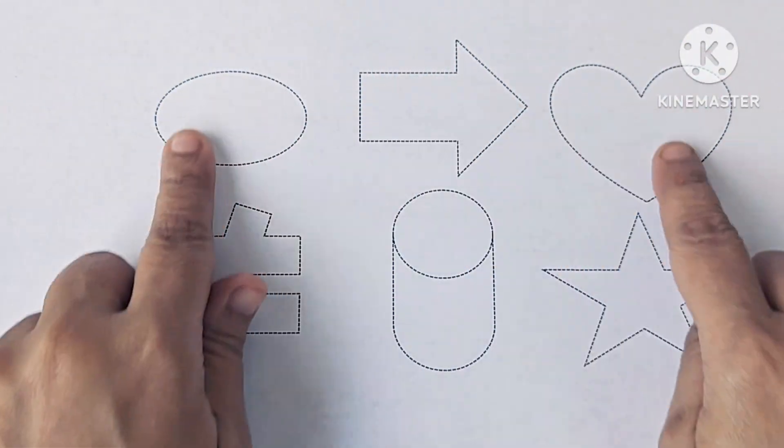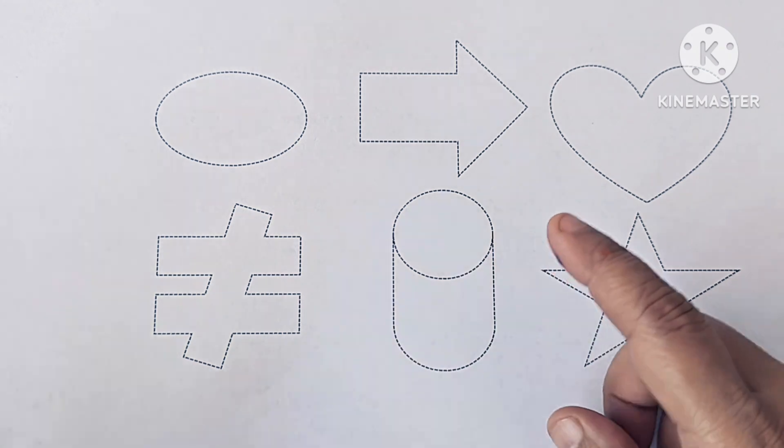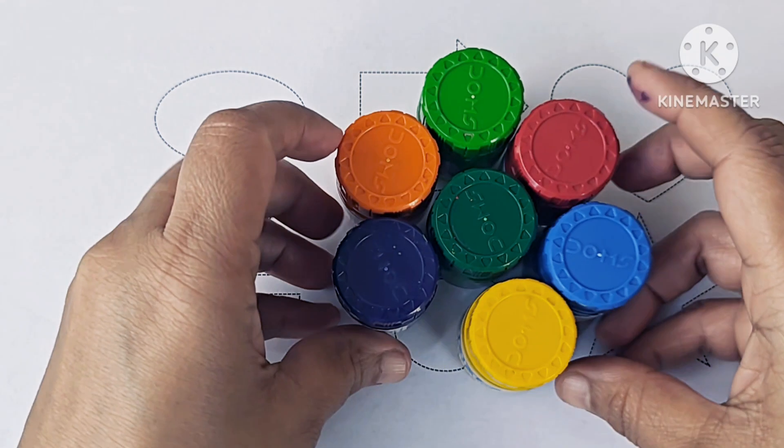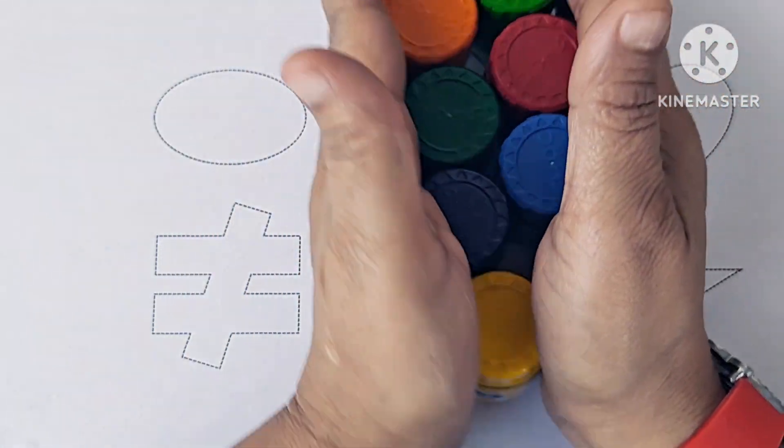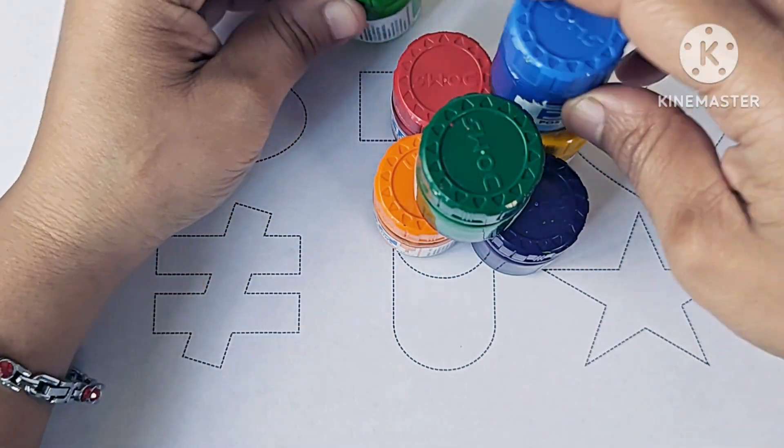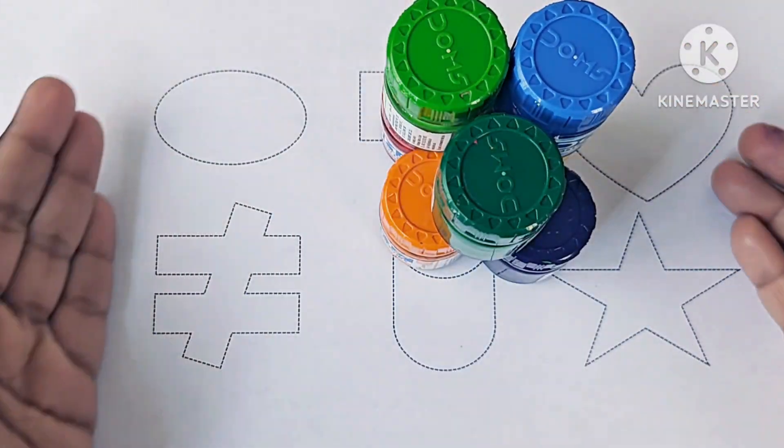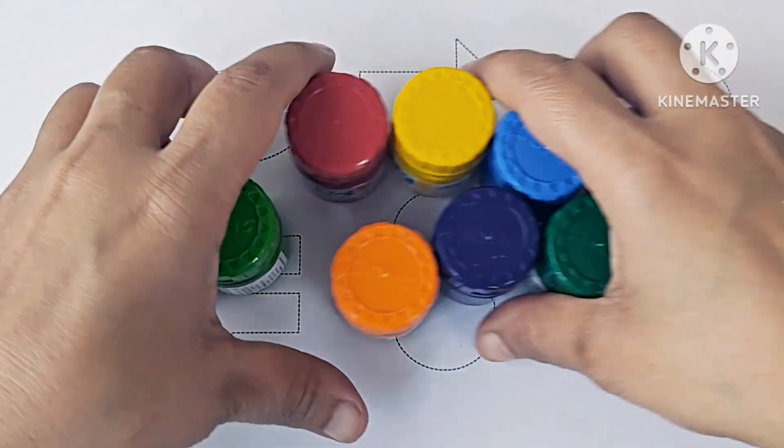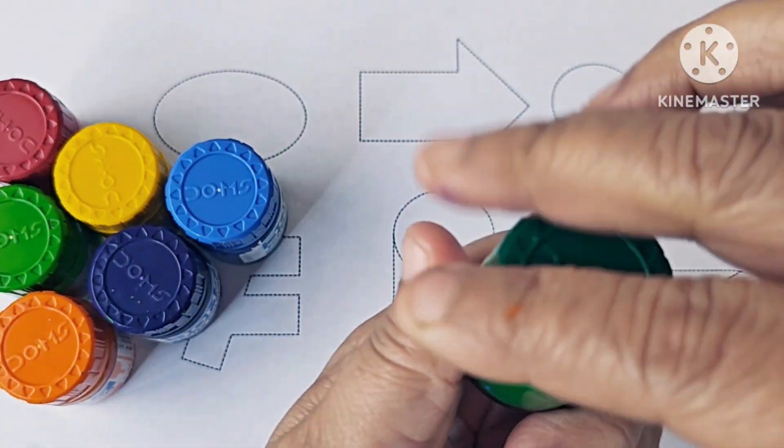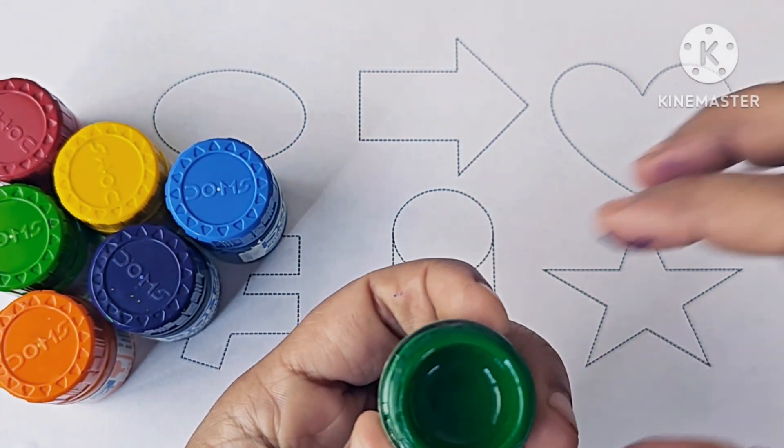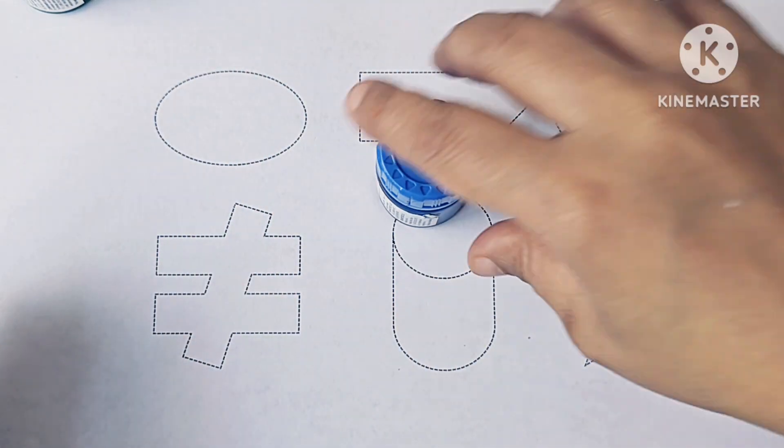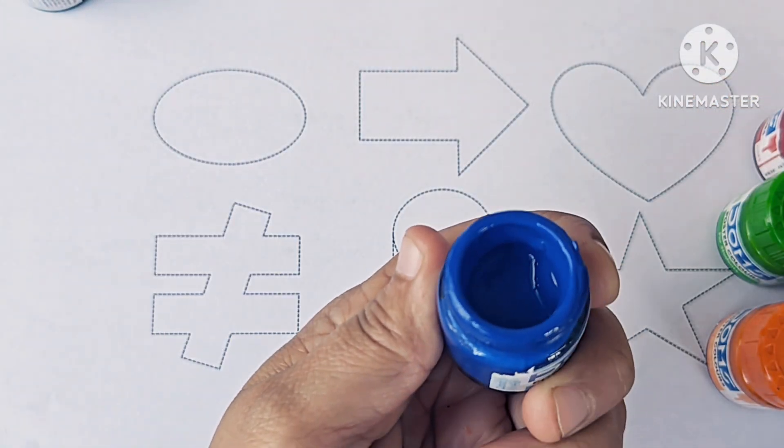Let's learn some 2D shapes. These are our 2D shapes and learn about the color names. These are our colors: green color, blue color.